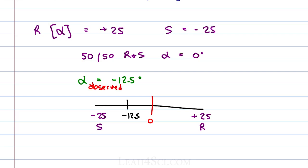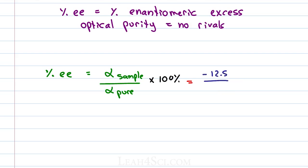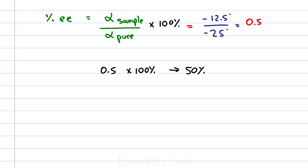In our first example, we are told that the alpha observed is equal to negative 12.5 degrees and the alpha pure was negative 25 degrees. If we punch this into the calculator we have negative 12.5 divided by negative 25. Notice that the negatives will cancel out and we get 0.5, but 0.5 is not a percent so remember you have to multiply this by 100 and that gives me 50%. What is 50%? Enantiomeric excess. So don't think of this as 50% S, it's 50% extra of your S.